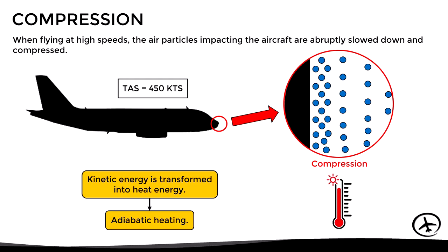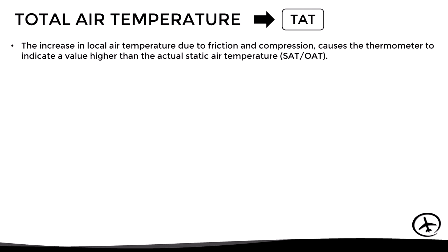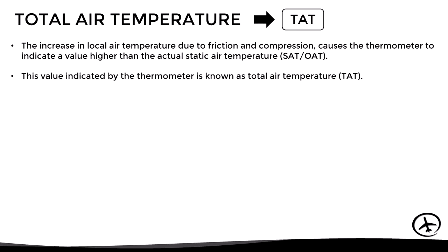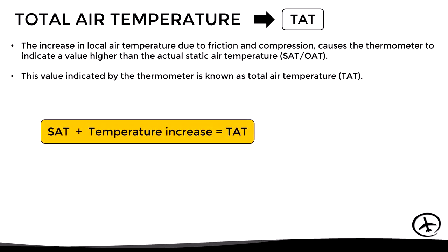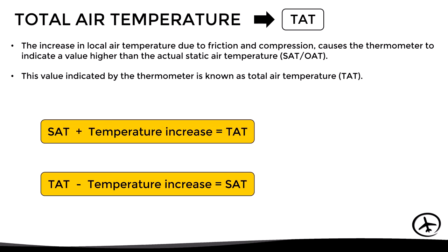Taking these two effects into account, we can now look at the definition of total air temperature, abbreviated as TAT. The increase in local air temperature due to friction and compression causes the thermometer to indicate a value higher than the actual static air temperature. Therefore, the value indicated by the thermometer in these cases is known as total air temperature. In other words, if we take the actual static air temperature and add the temperature increase due to friction and compression, we obtain the total air temperature. Conversely, if we take the total air temperature and subtract this temperature increase, we obtain the static air temperature.